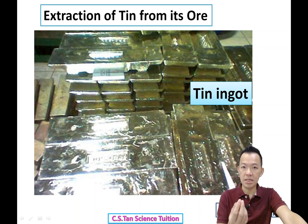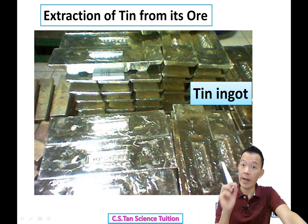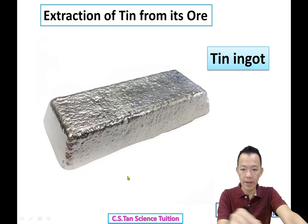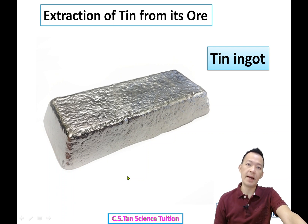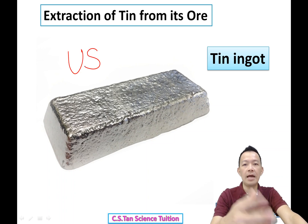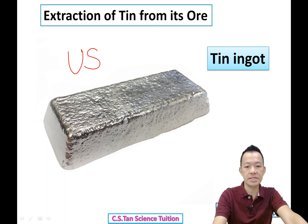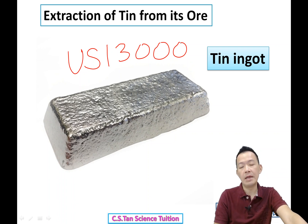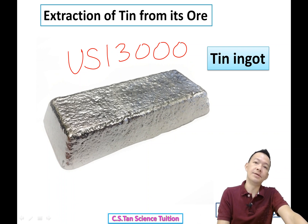Finally it becomes tin. The tin from Malaysia we call it 'straits tin' — very high quality tin compared to others. Tin will become tin ingots, and is sold in the market. One ton, normally the price is in US dollars — it can go up and down every day, surrounding maybe 13,000 USD per ton. Sometimes it increases to 20,000, maximum around 22,000. Sometimes maybe 10,000 only, depending on demand.